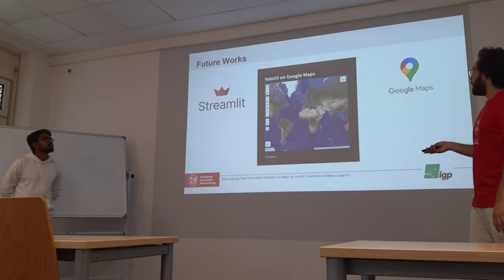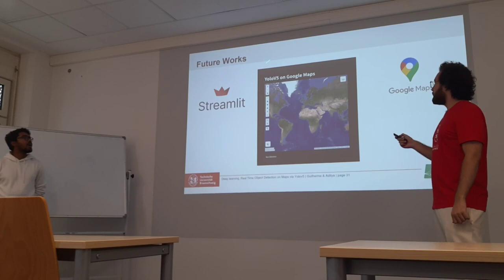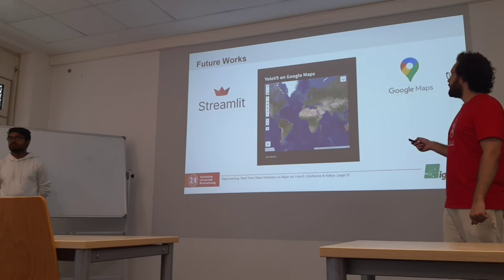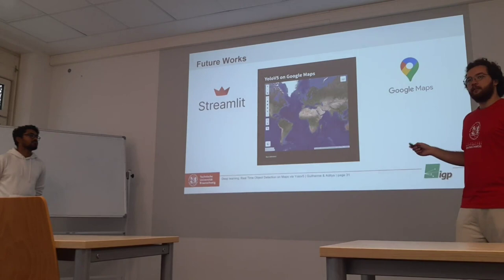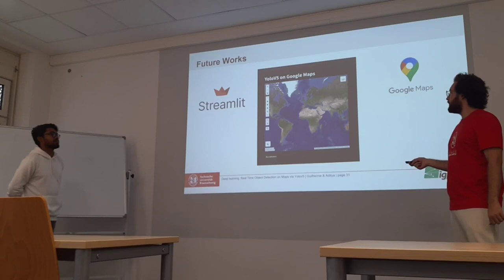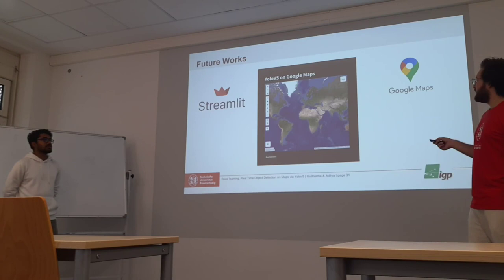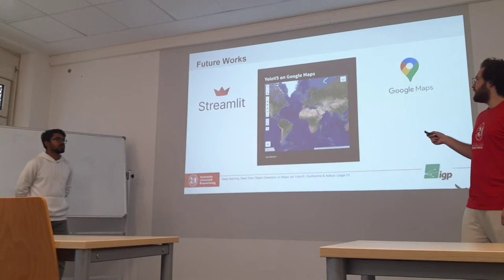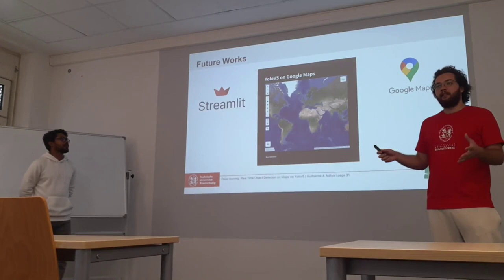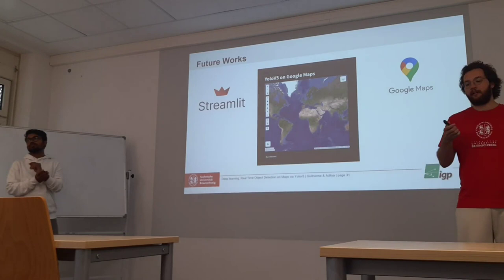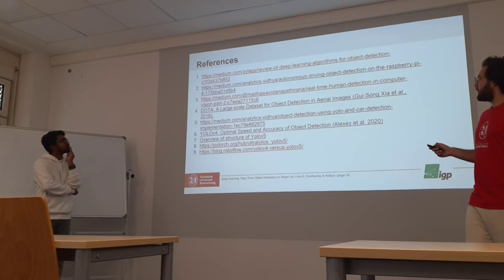For future work, we plan to continue developing the app using the Streamlit library. We have already built a page with an integrated map. The current challenge is obtaining the current map image and passing it to the model. The map is rendered as an HTML tag, so it is not easily accessible through library functions. We are trying to find a better integration with Google Maps for an easier connection between both parts. These are the references used throughout the presentation.